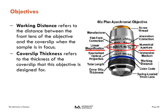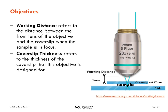The working distance refers to the distance between the front lens of the objective and the cover slip when the sample is in focus. Cover slip thickness refers to the thickness the objective is designed for — the standard is 0.17 mm, which is a number 1.5 cover slip. So the distance between the objective and your sample is the working distance plus that cover slip thickness of 0.17 mm.